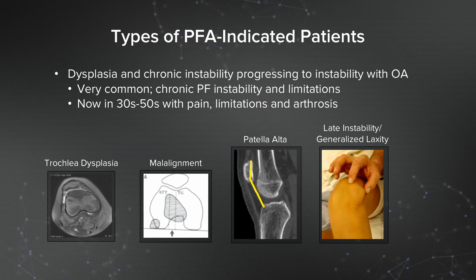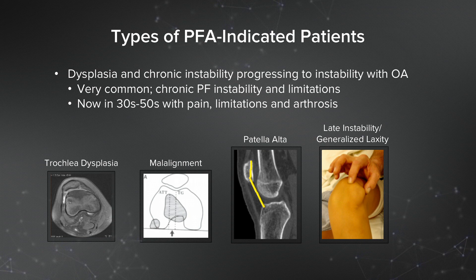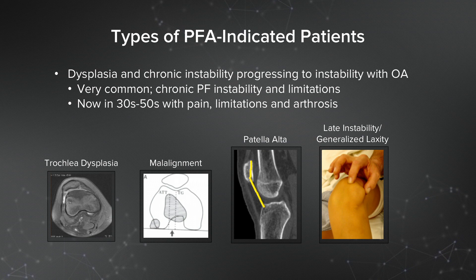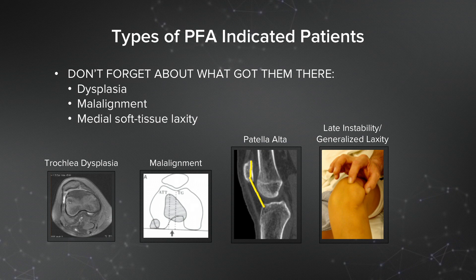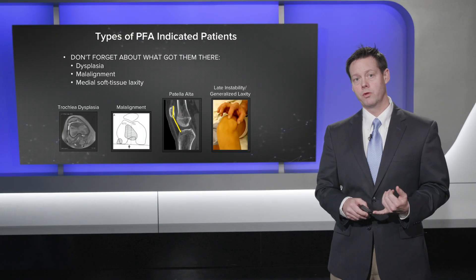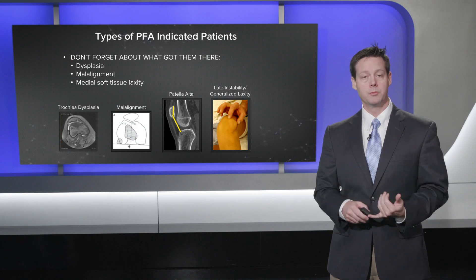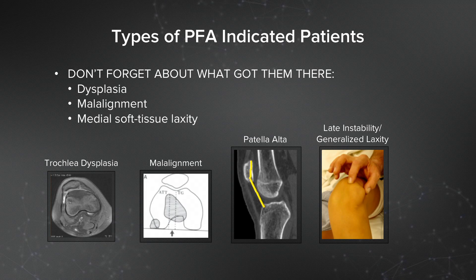One thing I'd like to talk about is the more complex patient. They can do very well with patellofemoral arthroplasty, and it allows us to do very beneficial things for these patients. Oftentimes they have significant dysplasia within the distal femur and the trochlea, and these patellofemoral arthroplasties, especially the onlay ones, allow us to really change the morphology. These patients have risk factors for their chronic instability that have now led to patellofemoral arthrosis, like dysplasia, malalignment, hyperlaxity of the soft tissues, and certainly patella alta.